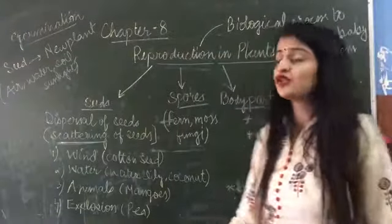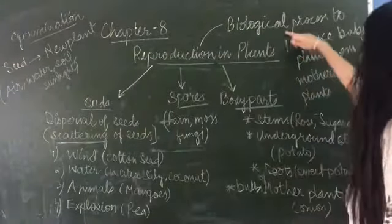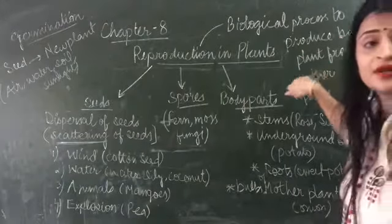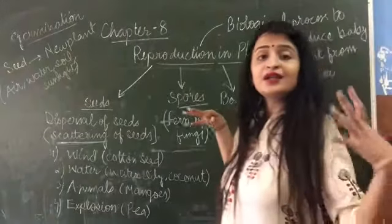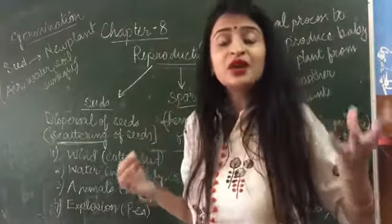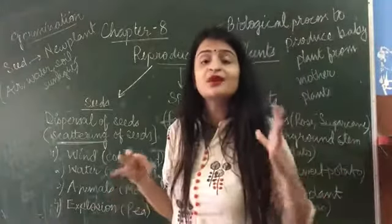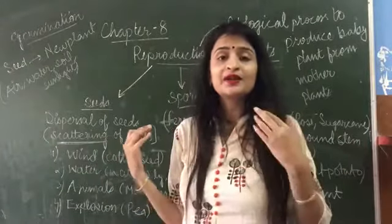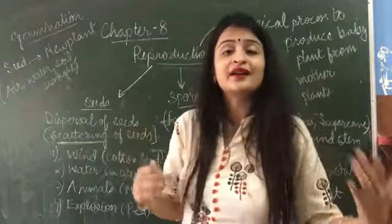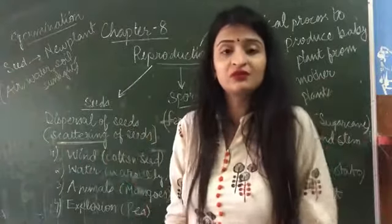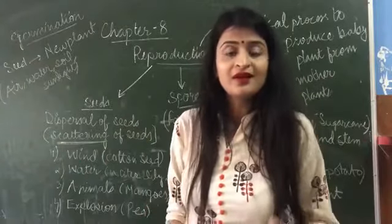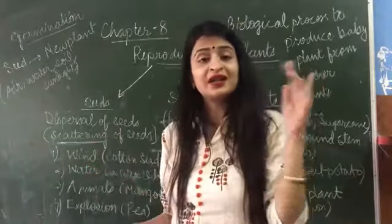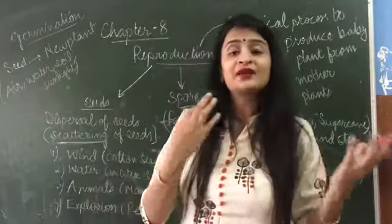Reproduction is a biological process to produce a baby plant from a mother plant. This is a small plant grown from a mother plant. This is the process of reproduction — a big plant that produces a new plant.